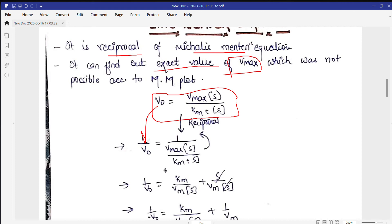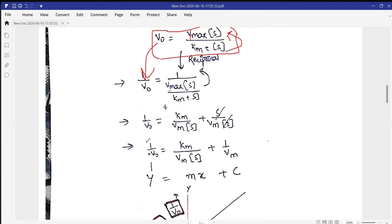V0 will become 1 by V0. This Vmax will come to the lower side while the Km will move to the numerator. Here this V0 is coming to the denominator and this Km upon Vmax and S upon Vmax. So S is cancelled by S and this whole reaction has been achieved. This reaction. And you can compare with a straight line reaction. So you can see Y equals Mx plus C. So Y will come here, Mx is this, and C is this.